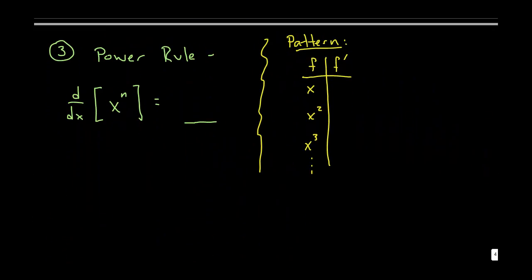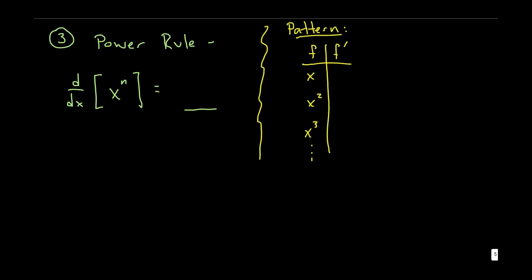Alright, the next rule we use all the time, it's called the power rule. It's where you have x raised to any given power. Before I give this rule, let's try to guess what the pattern would be. If you had y equals x, just the linear function y equals x, that has a slope of one. It's kind of a forty five degree line. So the derivative would be one because that's the slope.